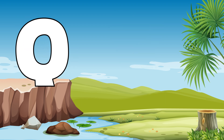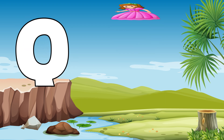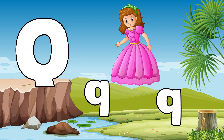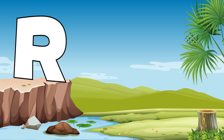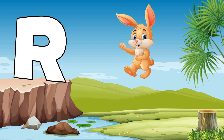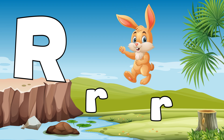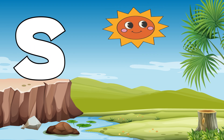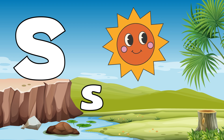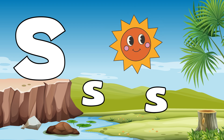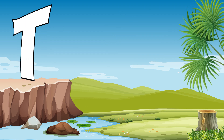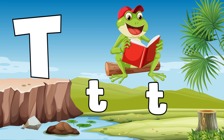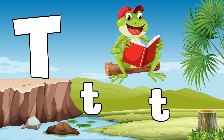Q is for queen, qu-qu-queen. R is for rabbit, r-r-rabbit. S is for sun, s-s-sun. T is for toad, t-t-toad.